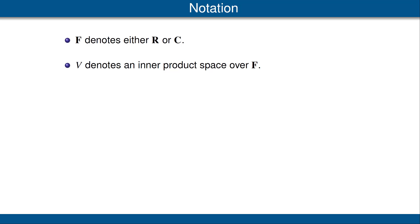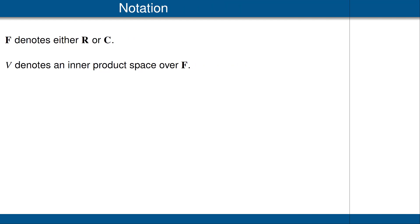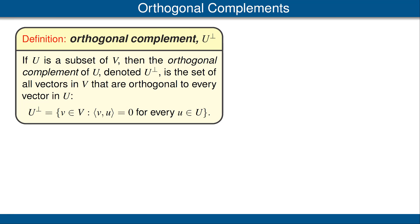Let's recall our standard notation. F denotes either the scalar field R of real numbers or the scalar field C of complex numbers. V denotes an inner product space over F. If U is a subset of our inner product space V, then the orthogonal complement of U is the set of all vectors in V that are orthogonal to every vector in U.